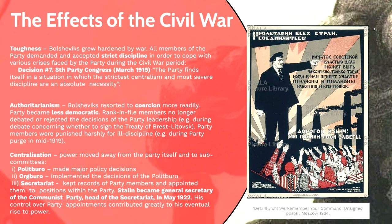Moving to authoritarianism: the Bolsheviks resorted to coercion more readily as a result of the Civil War. The party became less democratic — rank-and-file members no longer debated or rejected decisions of the party leadership. Party members were punished harshly for ill-discipline, for disagreeing, or for creating factions within the party, including through a party purge in mid-1919 where members seen as disloyal were expelled.